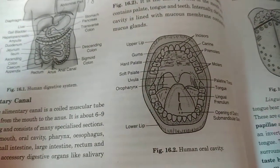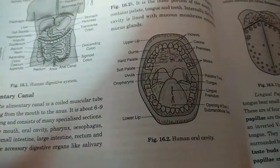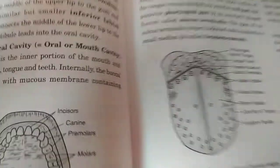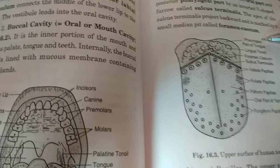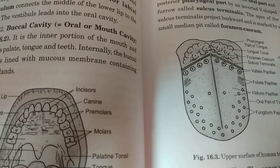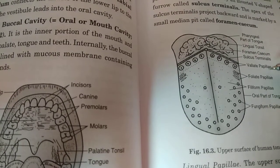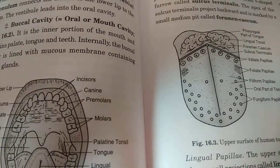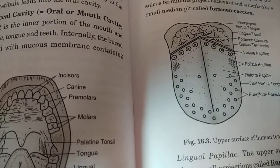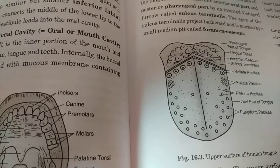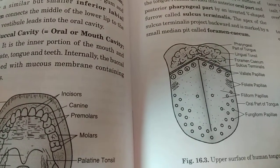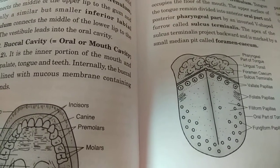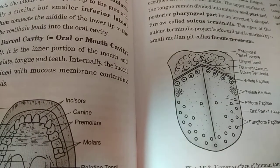These teeth help in the mastication of the food — that is, the chewing of food. The tongue is a voluntary muscular and glandular structure attached to the floor of the mouth by a fold called the lingual frenulum. The tongue occupies the floor of the mouth. The upper surface of the tongue is divided into anterior and posterior parts in a V-shape, marked by a small median pit called the foramen cecum.